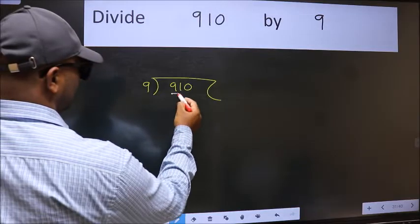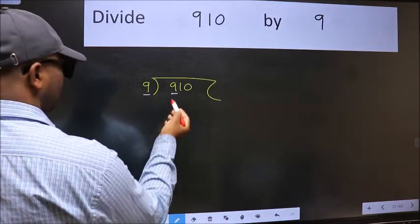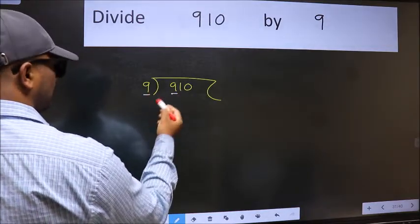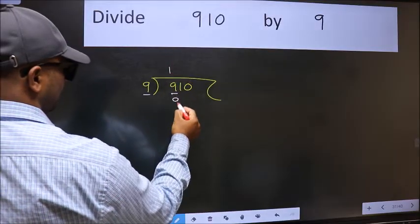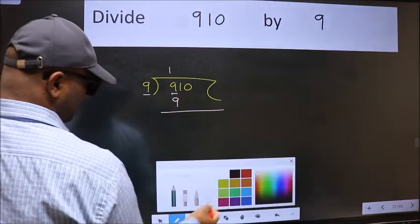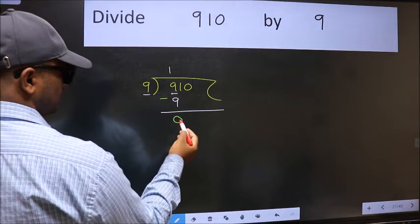Here we have 9 and here 9. When do we get 9 in 9 table? 9 ones 9. Now we should subtract. We get 0.